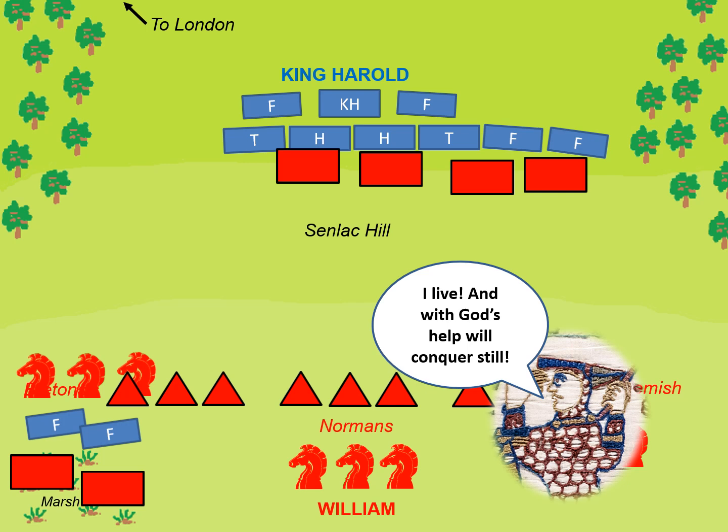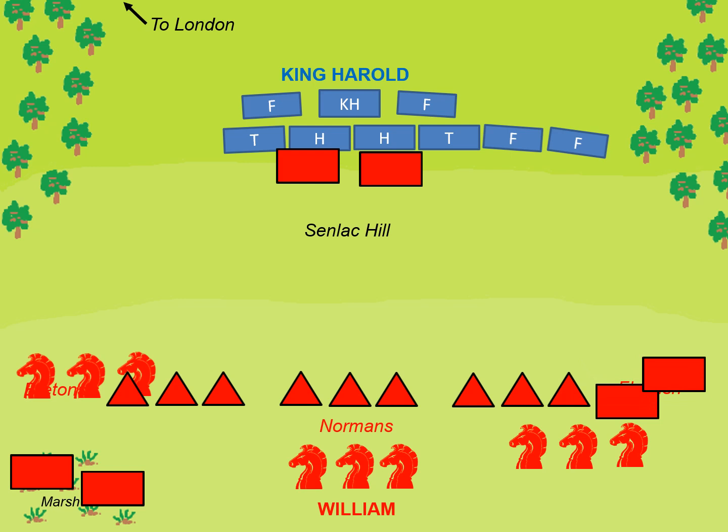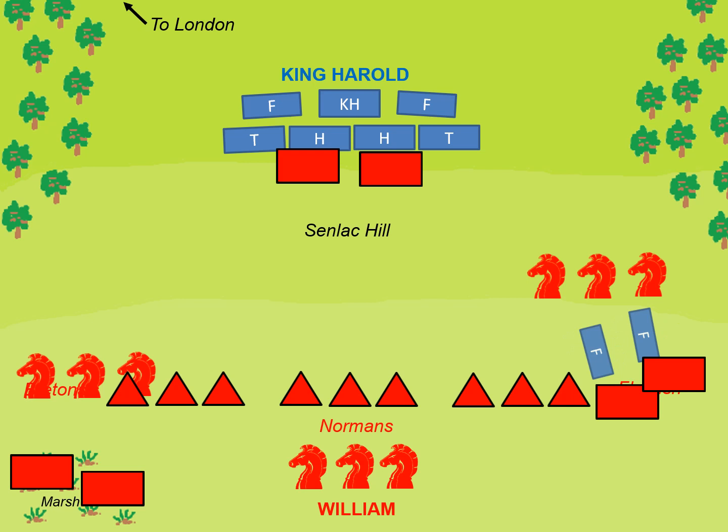This gave William an idea. There is evidence he had used feigned retreats in earlier battles to tempt enemies out of strong defensive positions — perhaps it would work again. He focused his attentions on the opposing flank and again ordered a fake retreat, and this time the fyrd duly followed them. Having taken the bait, William swept round them with his cavalry and slaughtered them too. By this point Harold's situation was desperate and his shield wall was getting seriously thin, with more fyrd troops filling the front row.